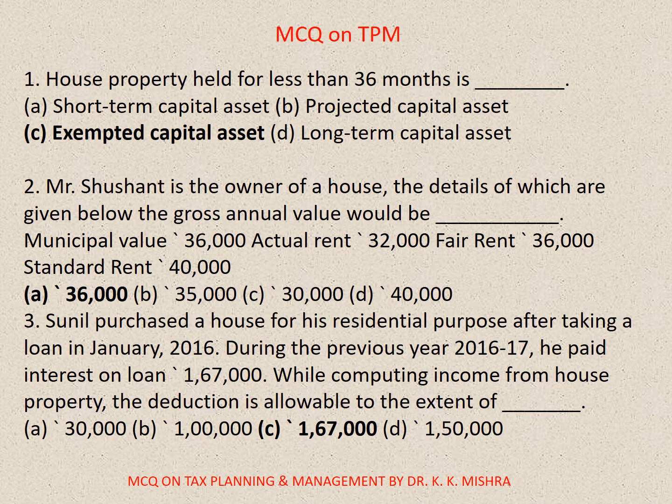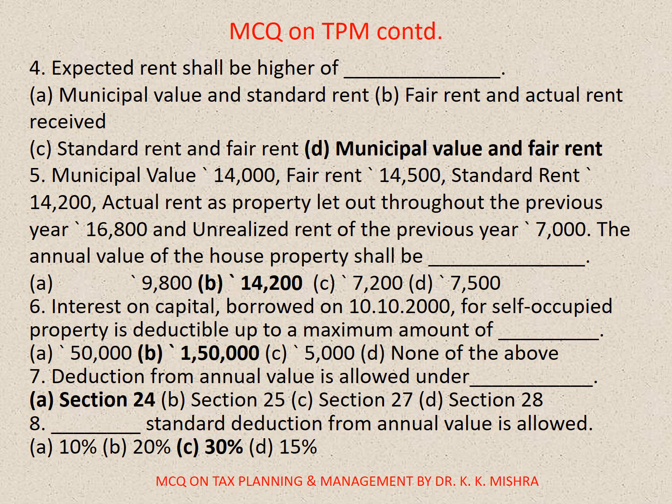Question number 3: Sunil purchased a house for his residential purpose after taking a loan in January 2016. During the previous year 2016-17, he paid interest on loan of 1,67,000. While computing income from house property, the deduction allowable is to the extent of — correct option is C: 1,67,000.